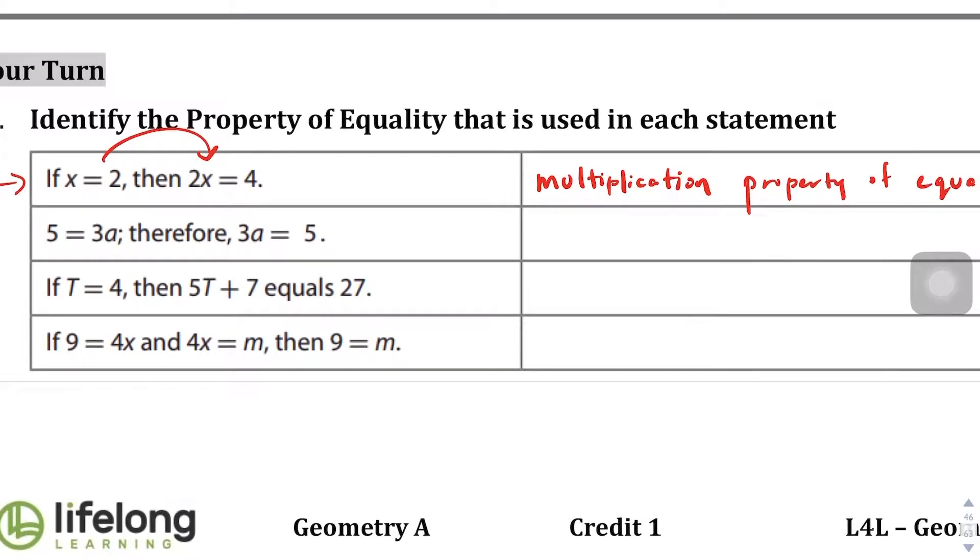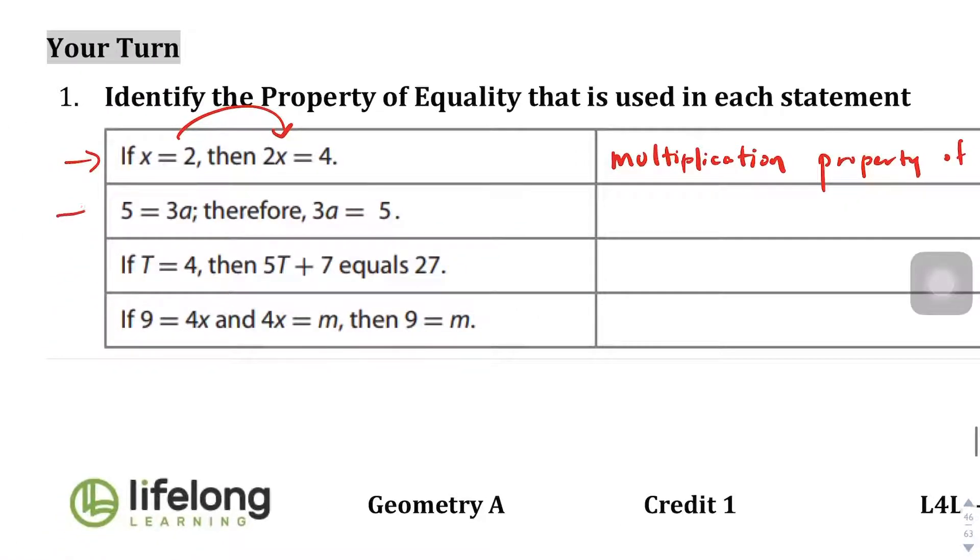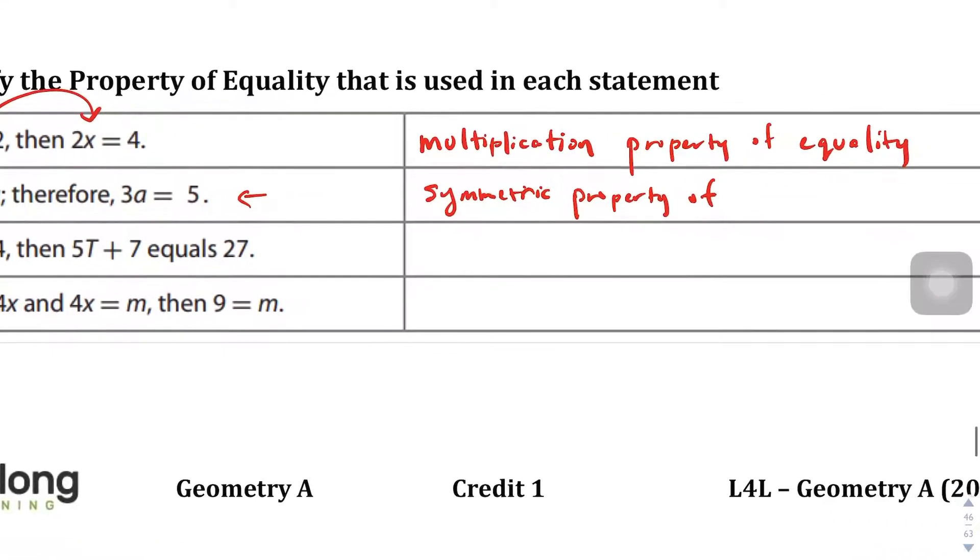Here we have 5 equals 3a, therefore 3a equals 5. We can see that it's clearly going back and forth. What that is, is it just means it's symmetrical, so therefore it's a symmetric property of equality.